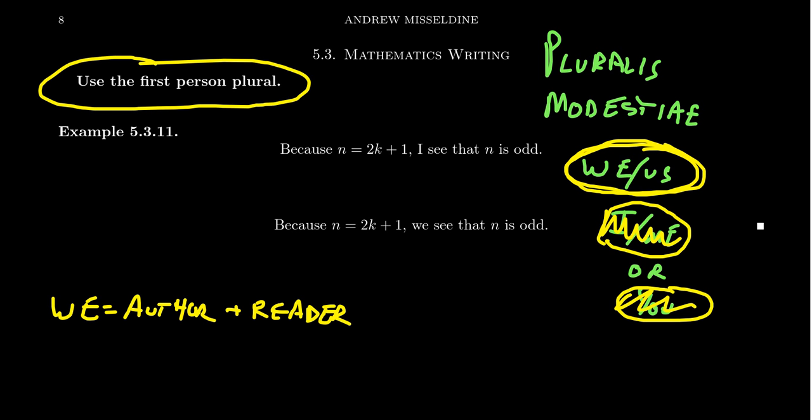And so this tip for writing I want to present in this video is to always use first person plural pronouns. So a bad example would be, say, something like the following: because N equals 2K plus 1, I see that N is odd. No, no, no, no, no. Don't use I.